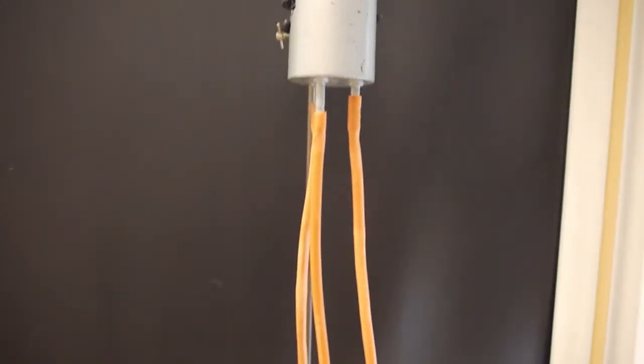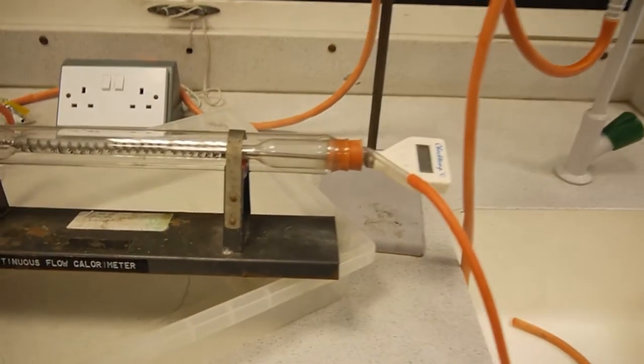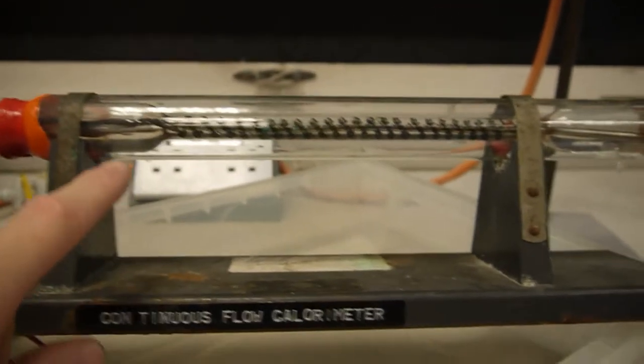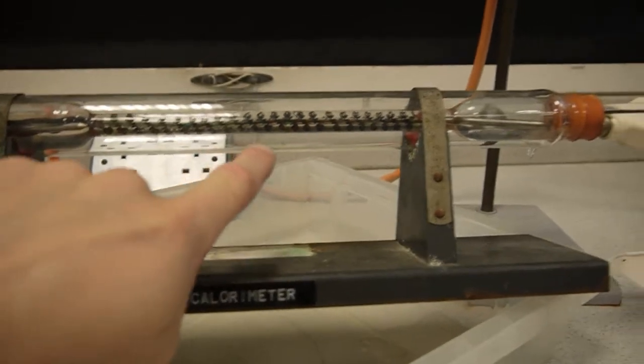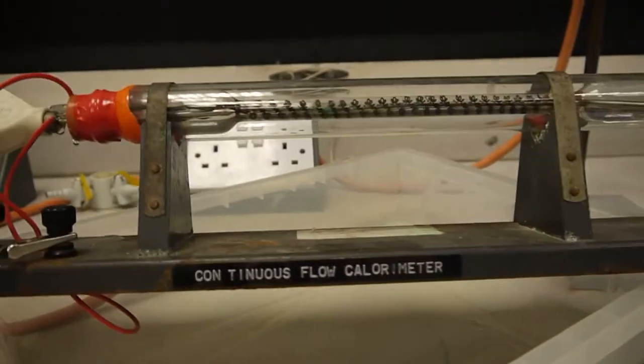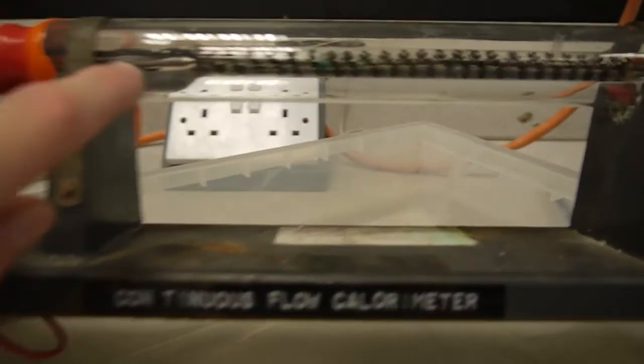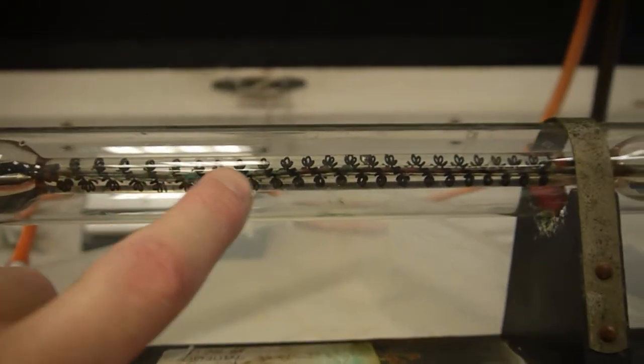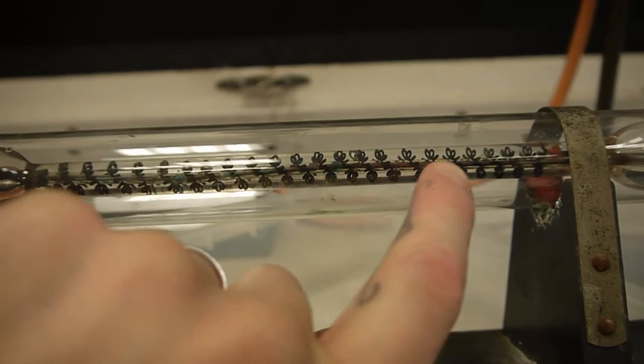This is the continuous flow apparatus for measuring the specific heat capacity of liquids, and in this case we're measuring the heat capacity of water. It consists of a partially evacuated glass tube that acts as an insulation jacket, and inside there is a narrower glass tube which contains a heating element wrapped around the entire length of that.